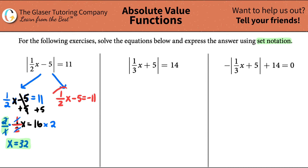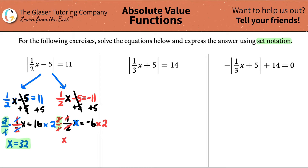Now we do the same for the second equation. I want to solve for x, so I'll add 5 first to get rid of that. One-half x equals negative 11 plus 5, which is negative 6. We do the same thing — x is being multiplied by one-half, so I multiply by the inverse, 2 over 1. The twos cancel, the ones cancel, and whatever you did on that side you do on the other side. So x equals negative 12, since negative 6 times 2 is negative 12. And there are your two answers.